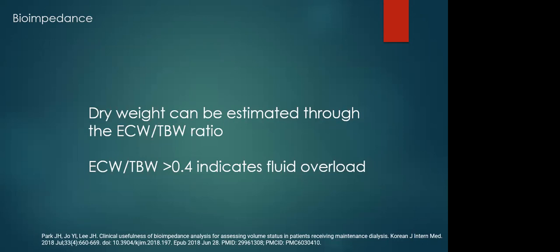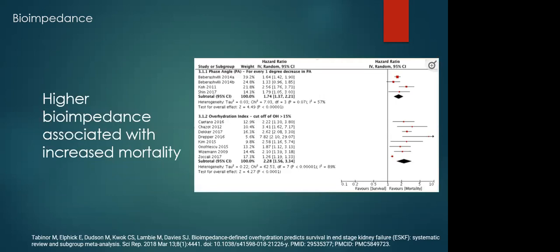Dry weight can be estimated by measuring the volume overload of the patient through the extracellular water to total body water ratio. In a study done in Korea on some 6,000 plus healthy subjects, they determined that an ECW to TBW ratio of greater than 0.4 indicated a state of fluid overload. In a systematic review of cohort studies, 32 out of 38 studies found that overhydration determined by bioimpedance was associated with worse survival independently of other known predictors such as age, comorbidity, and serum albumin.